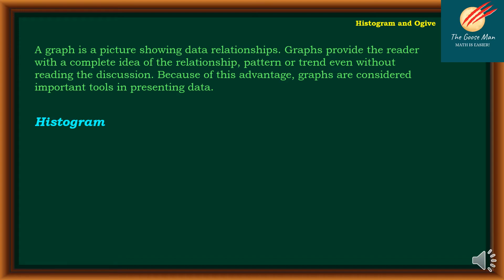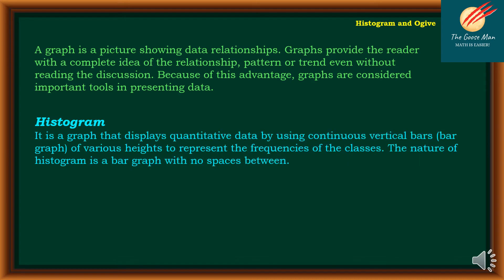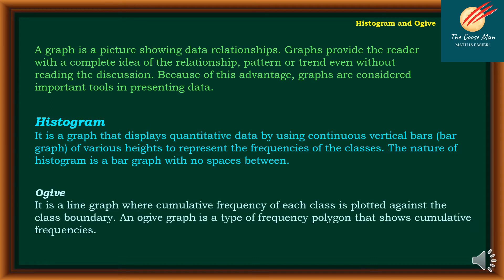The first one is the histogram. It is a graph that displays quantity data by using continuous vertical bars or a bar graph of various heights to represent the frequencies of the classes. The nature of a histogram is a bar graph with no spaces between. The other one is the Ogive. It is a line graph where the cumulative frequency of each class is plotted against the class boundary. An Ogive graph is a type of frequency polygon that shows cumulative frequencies.